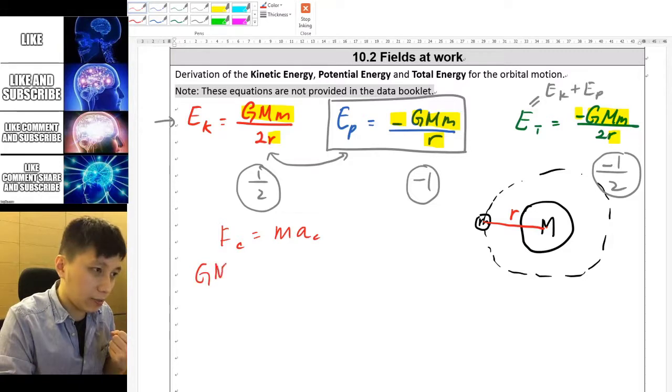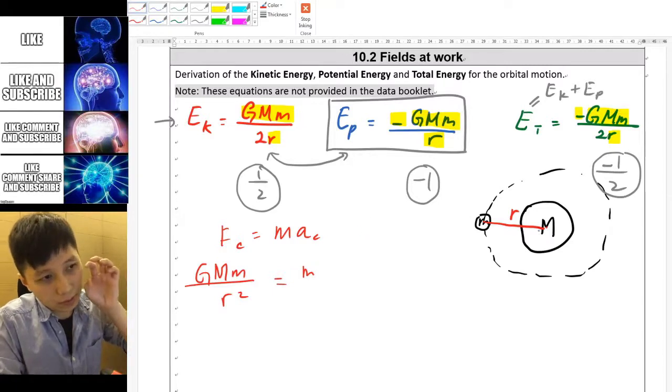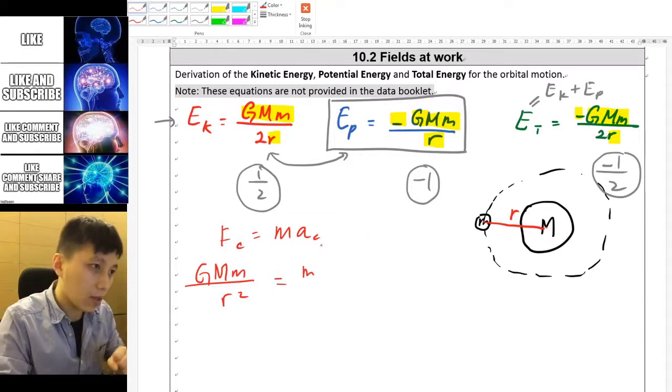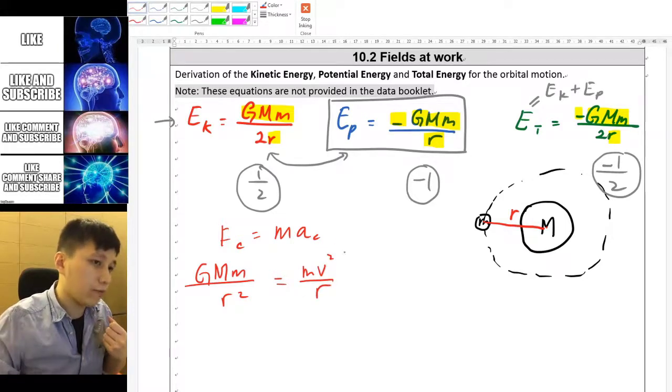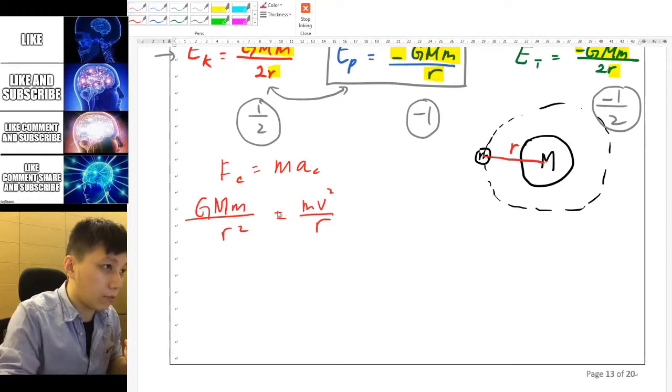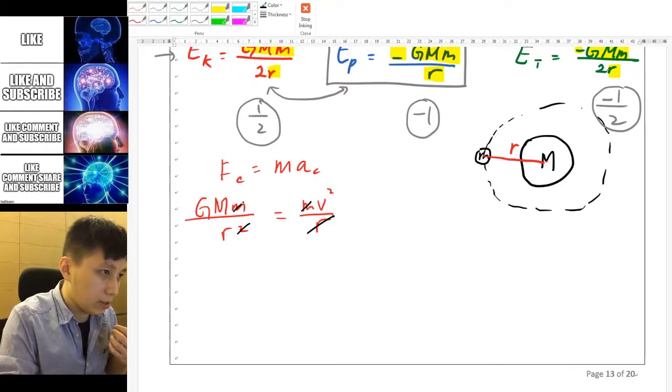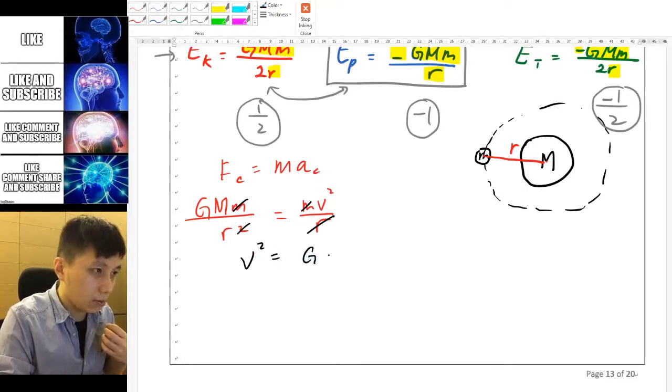So big G, big M, small m over r squared equals to the small m because this is referring to the small mass that is orbiting. And A we can use v squared over r. So if you try to simplify this we could take away the r on this side and only leaving you with one r and then we can take away the small m and therefore v squared equals to big GM over r.